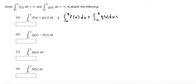We're told that the integral from 4 to 9 of f of x dx is equal to 12 and g of x is equal to negative 4. So it's 12 plus negative 4, which is 8.